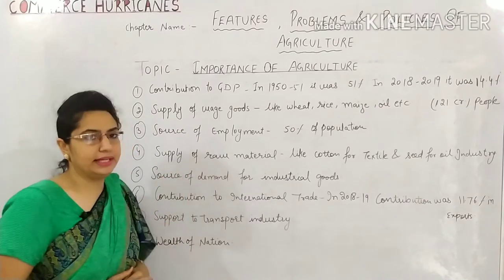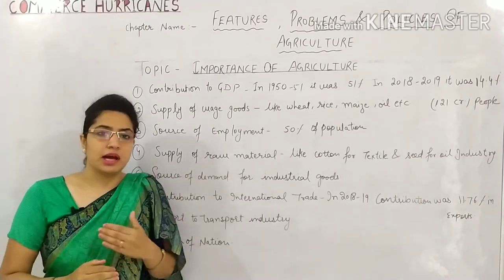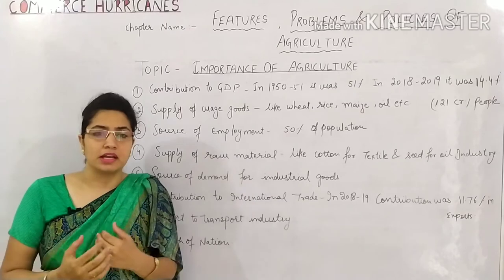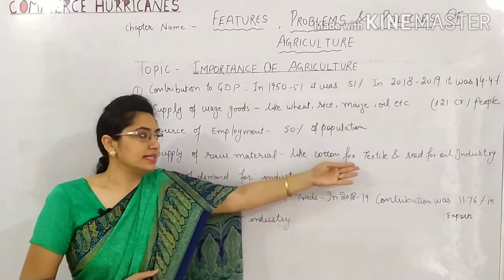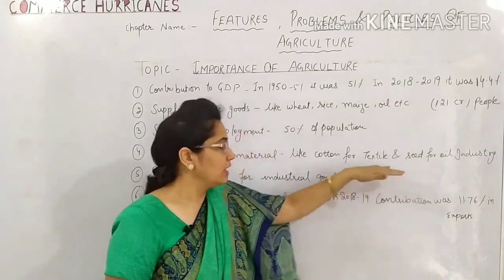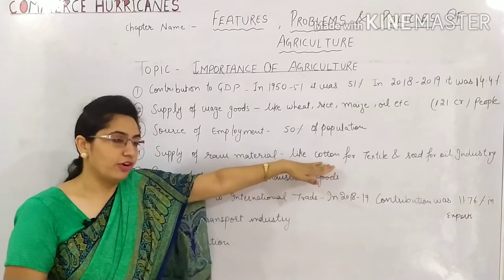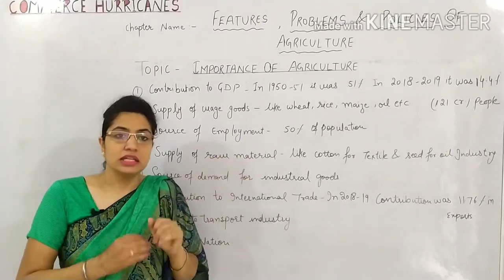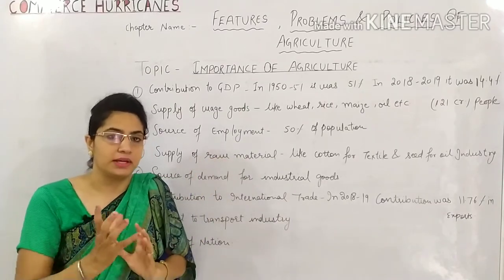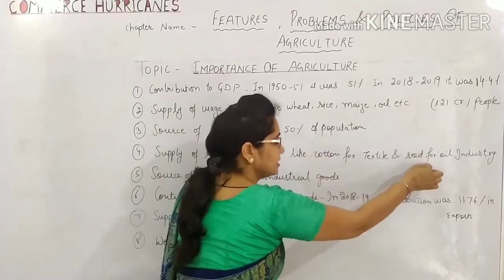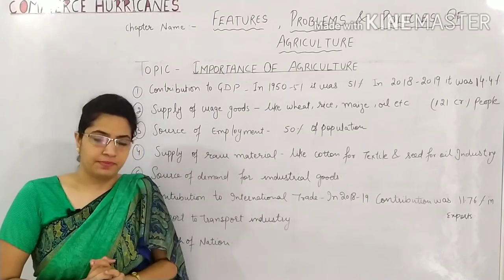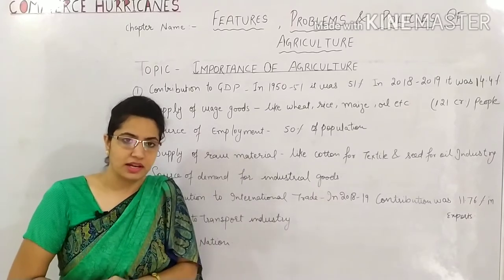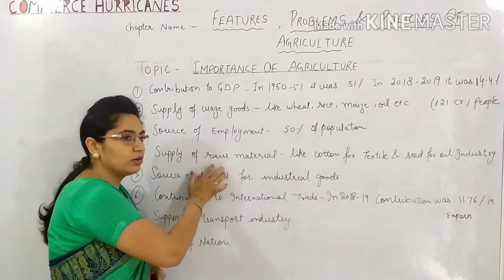The next point is Supply of Raw Materials. If you want to make clothes, you need cotton. If you want to make food items, you need agricultural produce. If you want to make oil, you need seeds. If you want to run the textile industry, you need cotton. So all these things — cotton, seeds, wheat — are raw materials that come from agriculture and are used in the secondary and tertiary sectors.